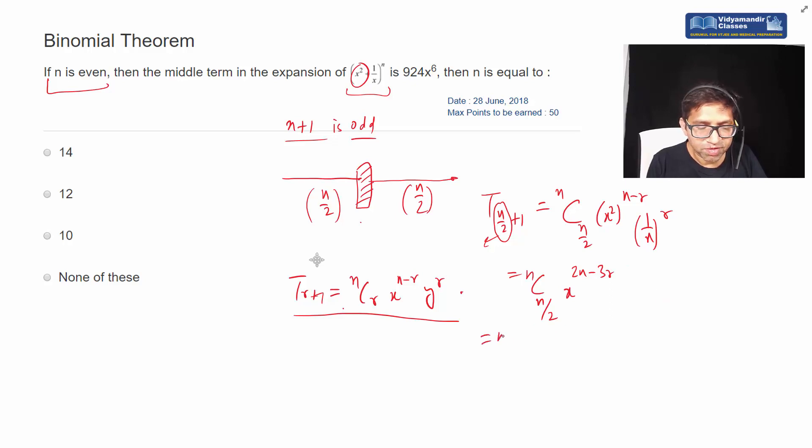In this step I replace r. Here we have to replace with n by 2, so 2n minus 3 by 2. I replace r with n by 2. This is my middle term. This is 924 x to the power 6.